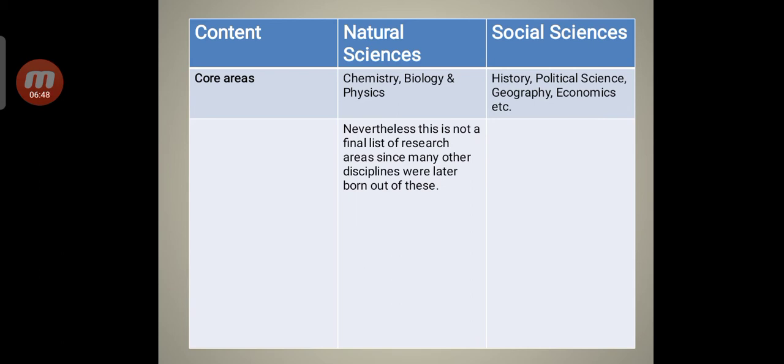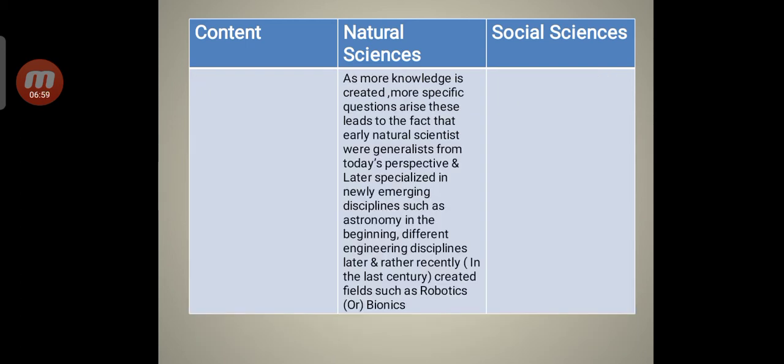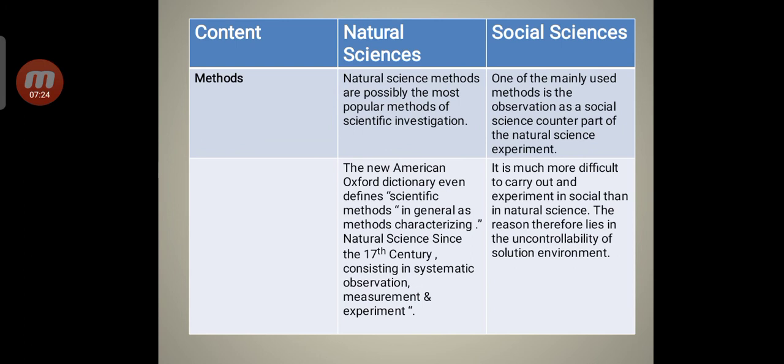Regarding natural sciences, nevertheless this is not a final list of research areas since many other disciplines were later born out of these. As more knowledge is created, more specific questions arise. This leads to the fact that early natural scientists were generalists from today's perspective and later specialized in newly emerging disciplines such as astronomy in the beginning, different engineering disciplines later and rather recently in the last century created fields such as robotics or bionics.